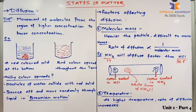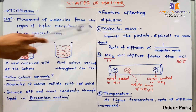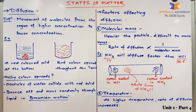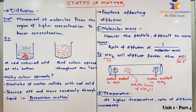Not all particles diffuse at the same rate. Some particles diffuse faster while others diffuse at a much slower rate. This depends on two important factors: molecular mass and temperature. Regarding molecular mass, a heavier particle takes more time to move from one end to the other, whereas a lighter particle moves at a faster rate. Therefore, the rate of diffusion is inversely proportional to molecular mass — heavier particles diffuse slower, lighter particles diffuse faster.